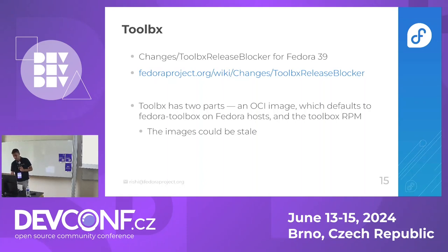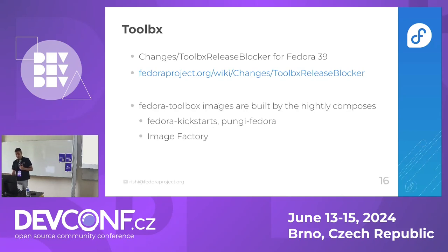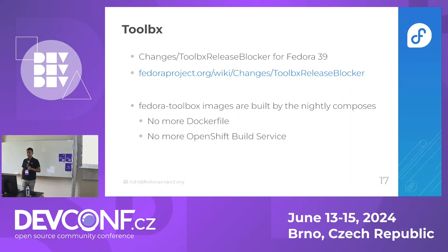Toolbox has two parts: an image and an RPM, and the image can go stale. For example, recently in Fedora 38, there were big changes in RPM's GPG stack, so the images were stale for quite a long time, making the whole thing unusable in Rawhide because somebody forgot to update or rebuild them. As a solution, since Fedora 39 the images are built by Kiwi composer, the source is defined in Fedora kickstarts or Pungi Fedora, and they're built by Image Factory — no longer defined as Dockerfiles, no longer built by the old OpenShift build service.